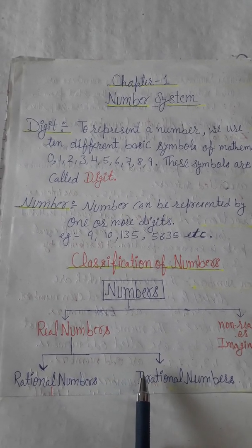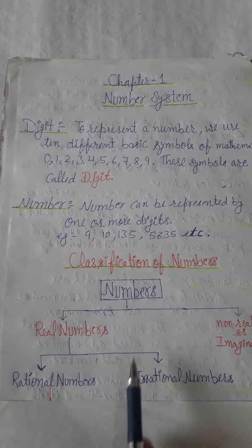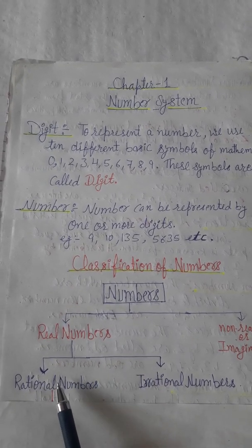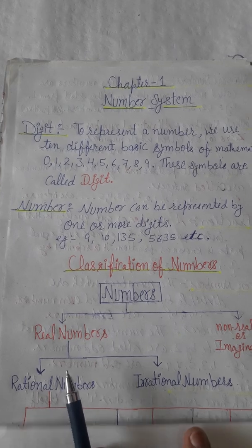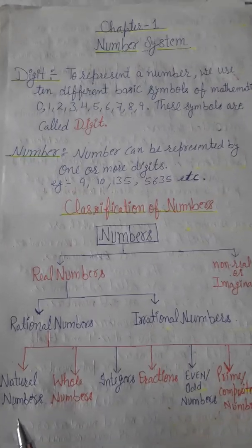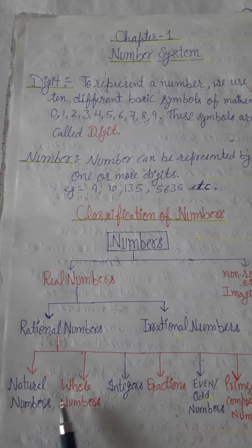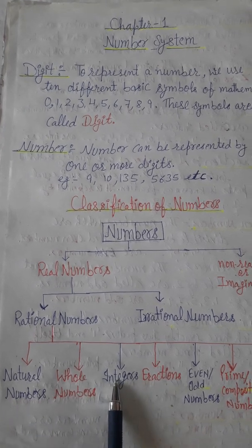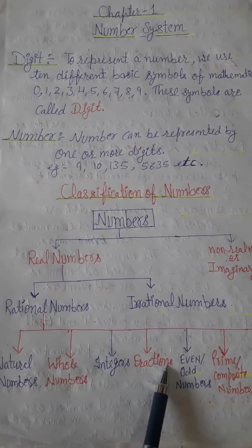These are in your syllabus. But before that, we must know about rational numbers. Rational numbers are further divided into these categories: natural numbers, whole numbers, integers, fractions, even numbers...